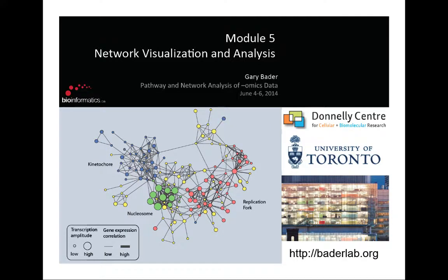Some background about network visualization and analysis, and then talk about a particular type of pathway analysis visualization called enrichment map that was used to make the autism network shown yesterday morning.